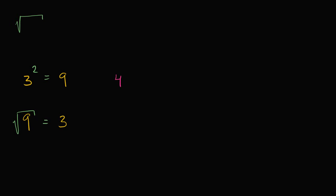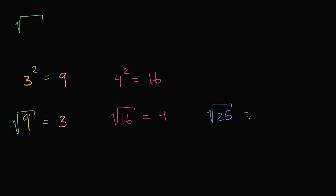I can do more examples. Four squared is equal to 16, so the square root of 16 is going to be equal to four. And starting with the square root: what is the square root of 25? This is the number that times itself equals 25 — the number where if I were to square it, I'd get 25. That's going to be equal to five, because five squared is equal to 25.